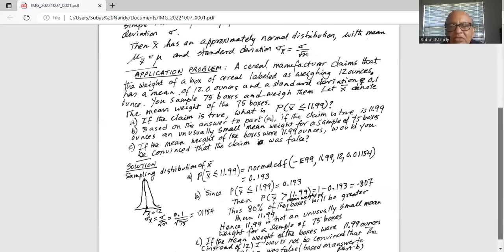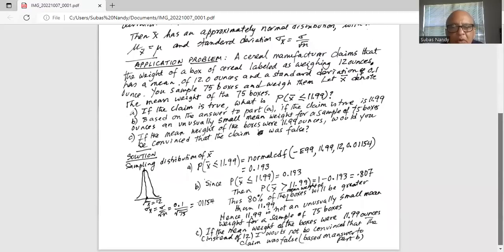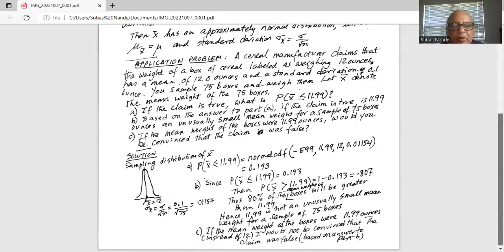And then my mean is 12. My standard deviation is 0.01154. That probability works out to be 0.193.